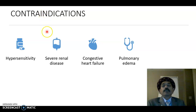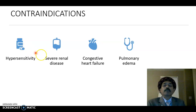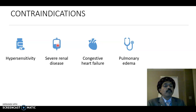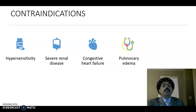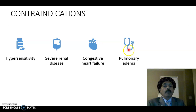The contraindications include hypersensitivity — some people may be hypersensitive to mannitol or other osmotic diuretics. Severe renal disease is a contraindication because if the kidney has totally failed, the osmotic diuretic cannot filter through the glomerular membrane to the proximal convoluted tubule. It is also contraindicated in congestive heart failure, as the heart needs an adequate amount of fluid to pump properly. It is contraindicated in pulmonary edema — please remember it is indicated in cerebral edema but contraindicated in pulmonary edema.